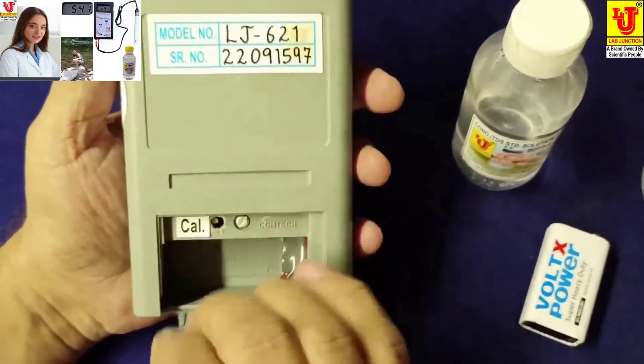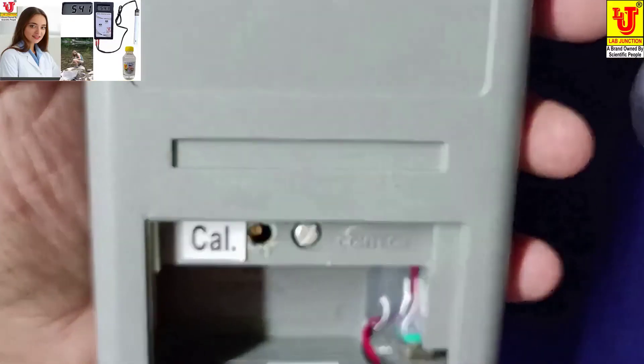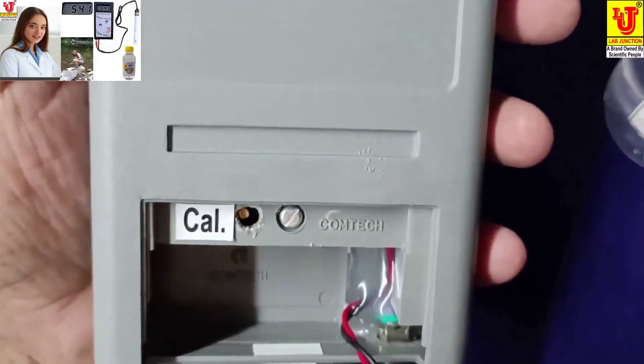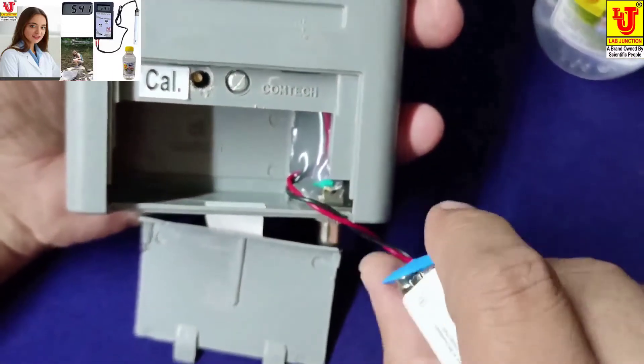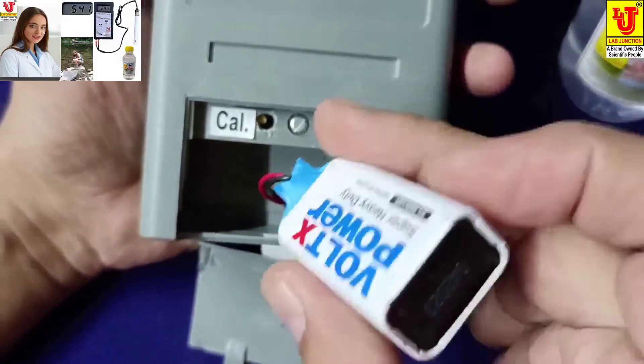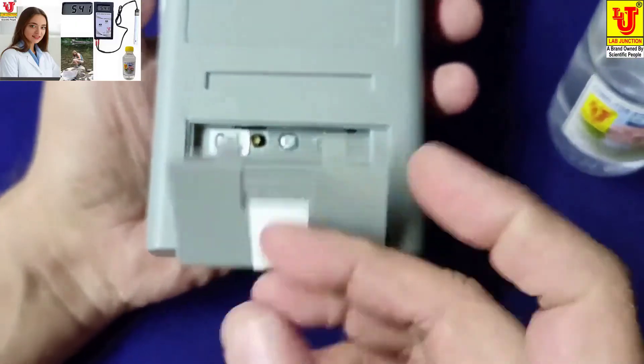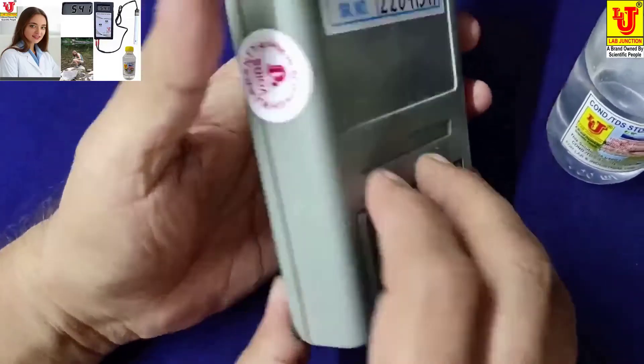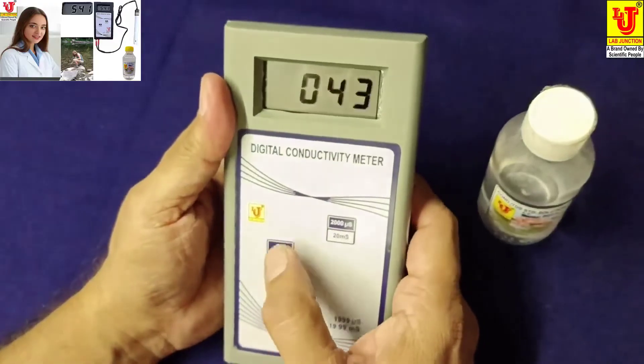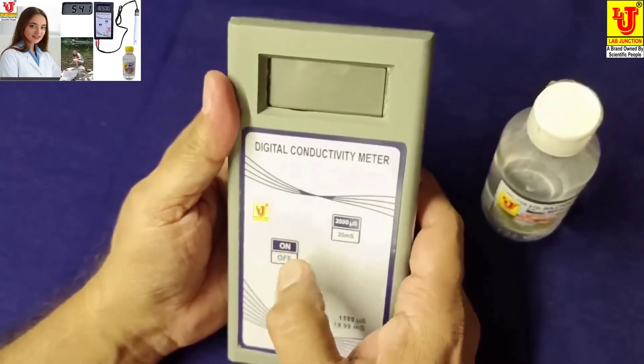This is cal control to calibrate instrument with standard solution. Now I am inserting battery and connected to the instrument like this. Now this is switch on, this is switch off, switch on, switch off.